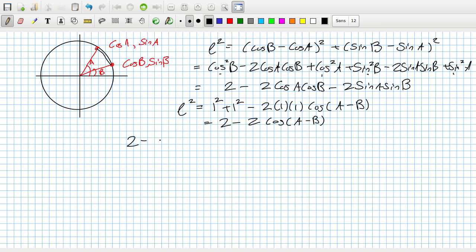Since they're both equal to L squared, you can make them equal: 2 minus 2 cos A cos B minus 2 sin A sin B equals 2 minus 2 cos(A - B). You can cancel these twos, and dividing by minus 2, you'll get cos(A - B) equals cos A cos B plus sin A sin B.